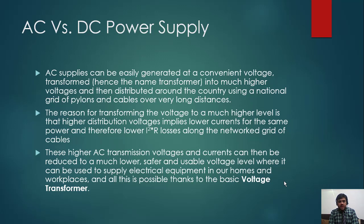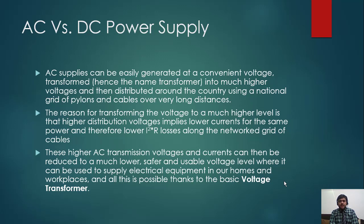The reason for transforming the voltage to a much higher level - why are we doing this? Because at higher distribution and transmission voltages, the I² losses are less. The formula for power loss is P = I²R. Resistance is constant - ideally we use a material with very low resistance so that losses are minimized. If R is higher, losses occur in the conductor.